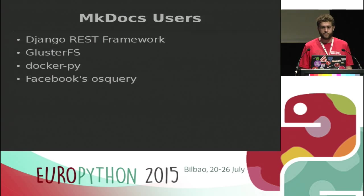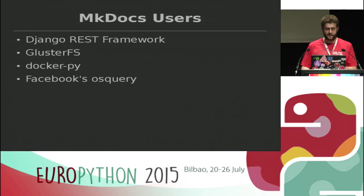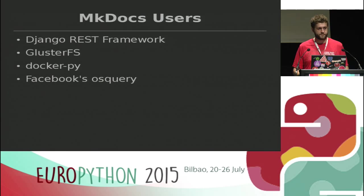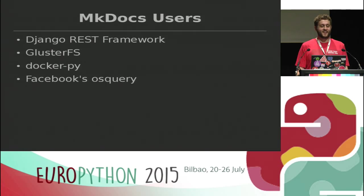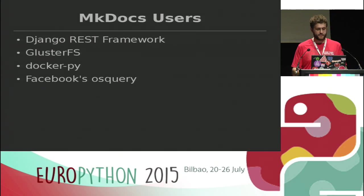We've grown quite a lot in the last year and it's a reasonably popular project now. I've highlighted four of the larger projects based on popularity — how big their documentation is and how popular they are on GitHub. The first one is obvious because Tom wrote this project originally. GlusterFS is a distributed networking file system, and they just have a really large set of documentation — hundreds of Markdown files — so it's nice to see it works so well for such a large project. Then there's the Docker Python client, and finally Facebook's OSQuery, which is a query language for finding stuff about your operating system.